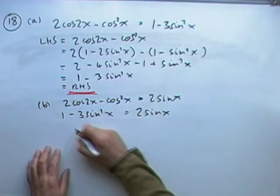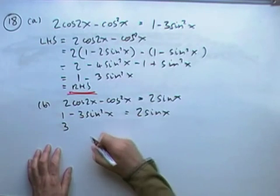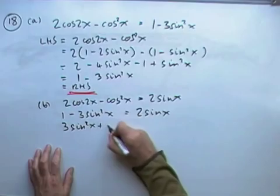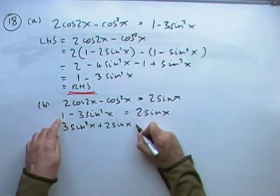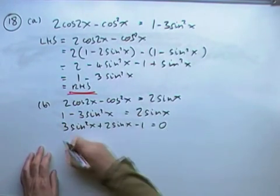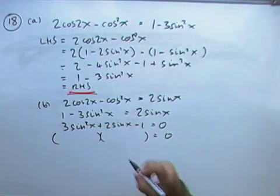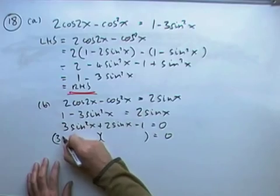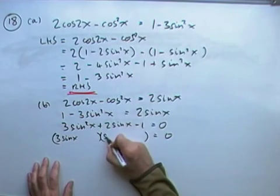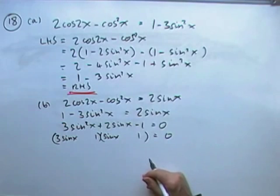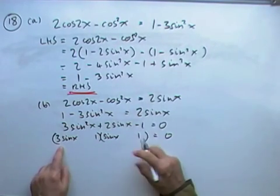So I'll rearrange that. I'll take over to this side, though, to make it formally look like a quadratic equation. 3 sine squared x plus 2sinx minus the 1 equals 0. Given that it works, although you can just quickly check the discriminant, it can only be 3sinx times sinx. It can only be 1 times 1.